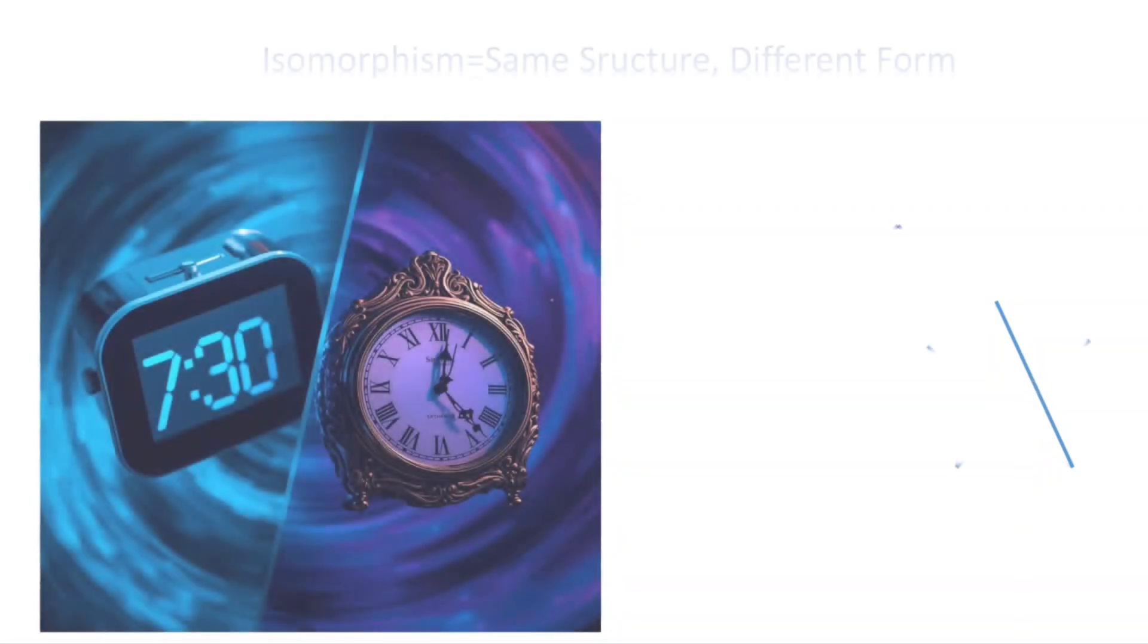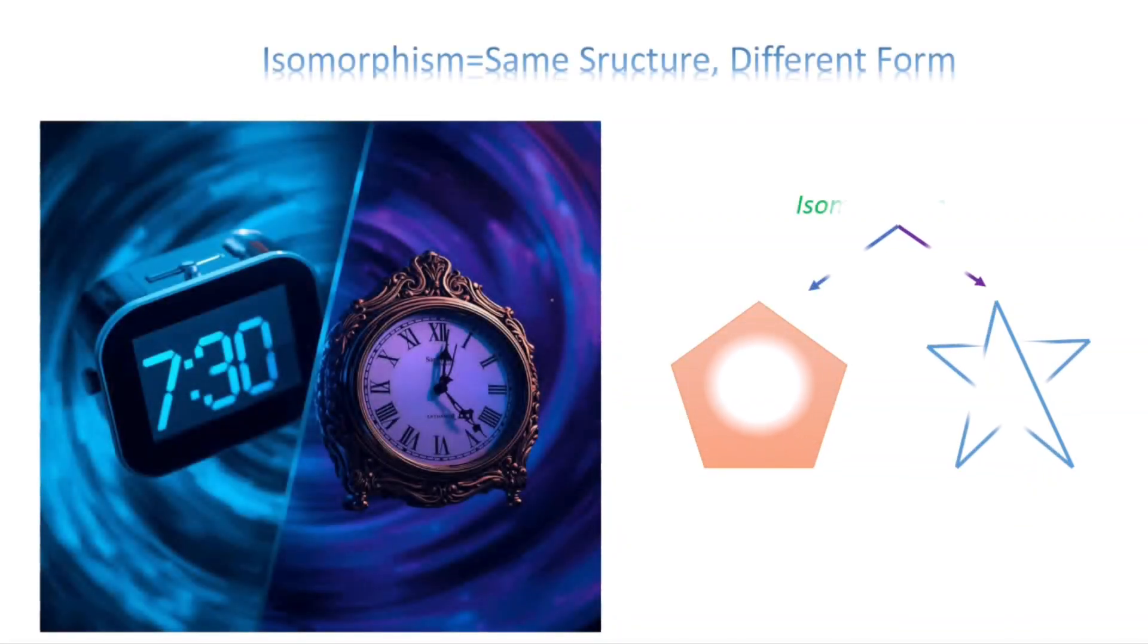So, isomorphic structure seems difficult, right? Let's clarify it. Think of an analog clock and a digital clock. They look different but show the same time. Deep down there, isomorphic. Or a pentagon and a star. Five points linked differently, yet same underlying structure.